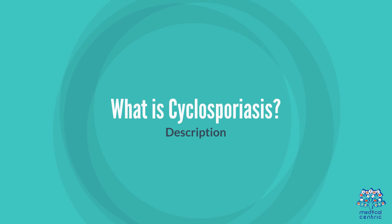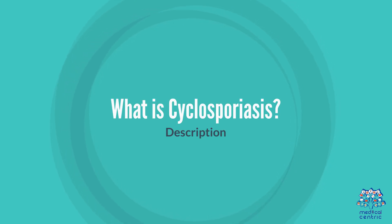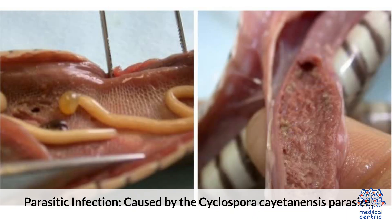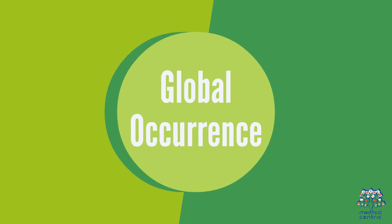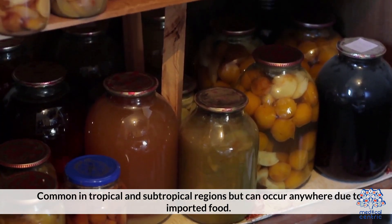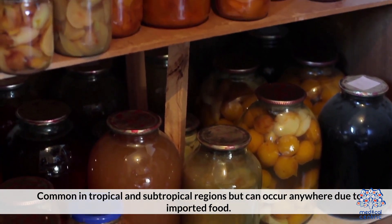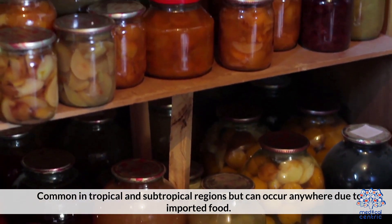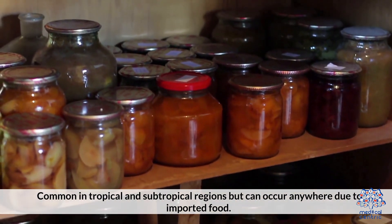1. What is Cyclosporiasis? Cyclosporiasis is a parasitic infection caused by the Cyclospora cayetanensis parasite. It has global occurrence and is common in tropical and subtropical regions, but can occur anywhere due to imported food.